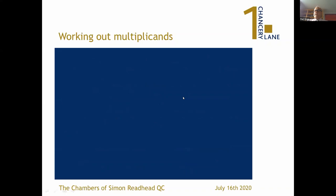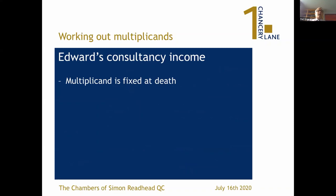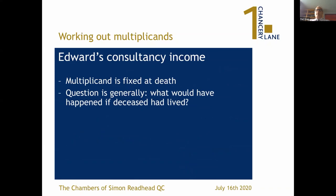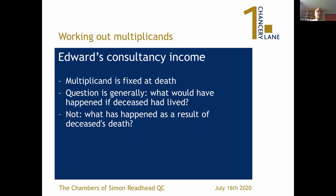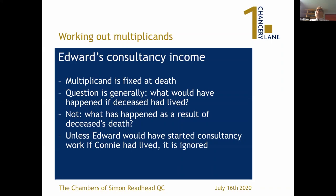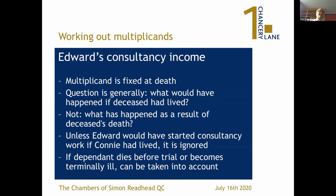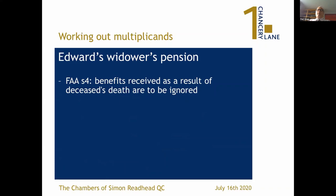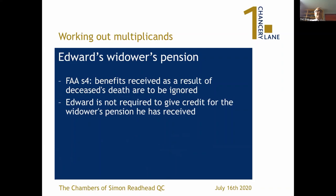What about Edward's consultancy income? The multiplicand is fixed at death in general terms. The question is what would have happened if the deceased had lived, not what has happened as a result of the death. So unless you can say that Edward would have started his consultancy work even if Connie had lived, his income is now ignored under section 4 of the Fatal Accidents Act. If, however, the dependent dies before trial or becomes terminally ill, that can be taken into account in calculating the multiplicand for the future. As for Edward's widow's pension, under the Fatal Accidents Act benefits received are ignored, so he is not required to give credit for the widow's pension. In that sense, Edward is in fact better off.